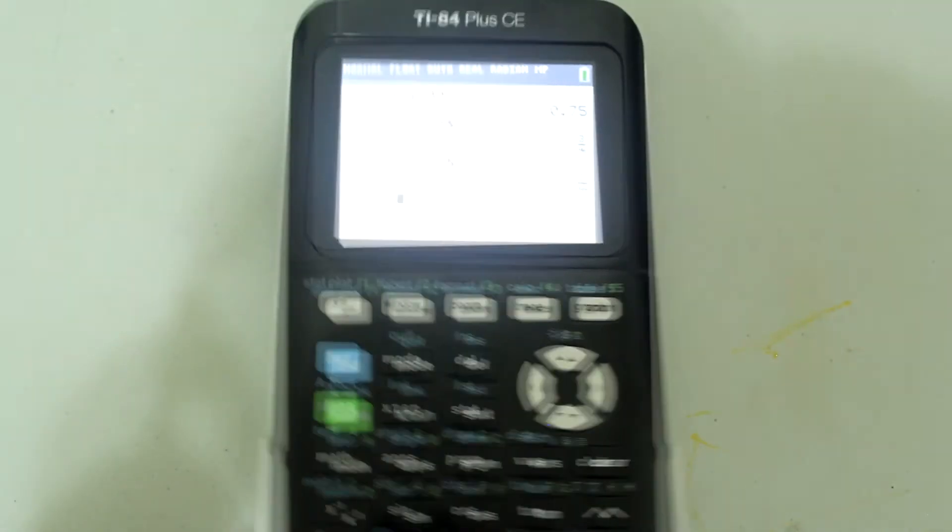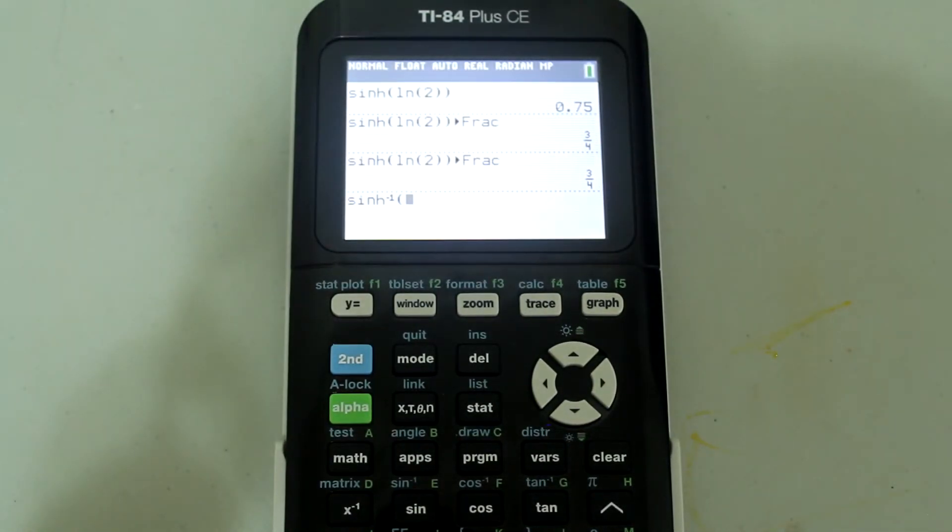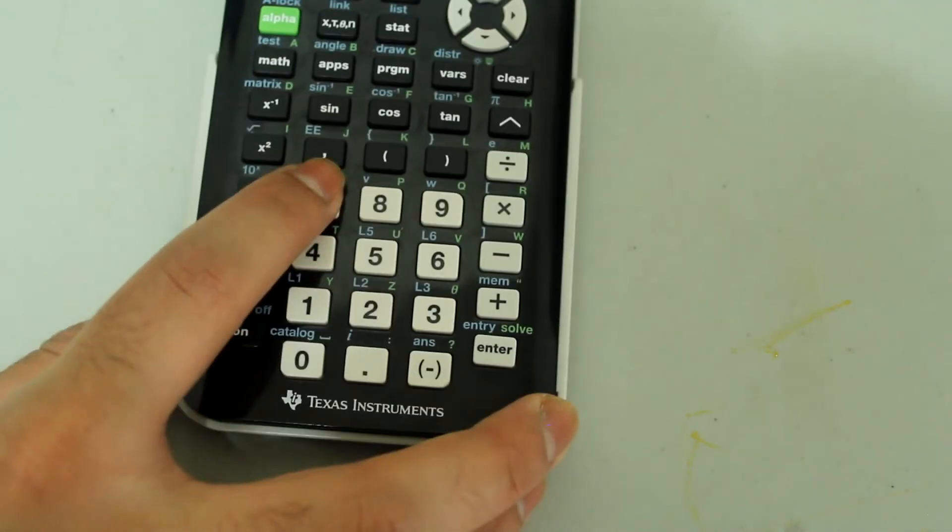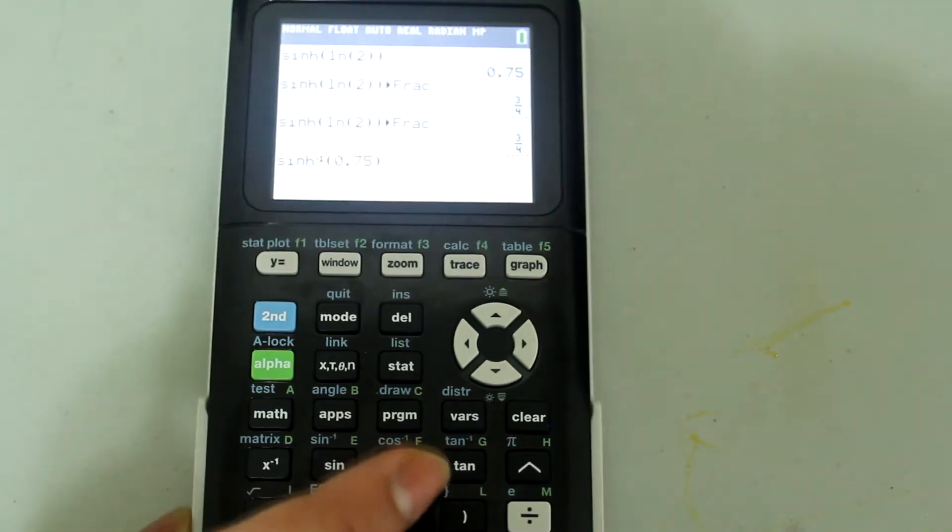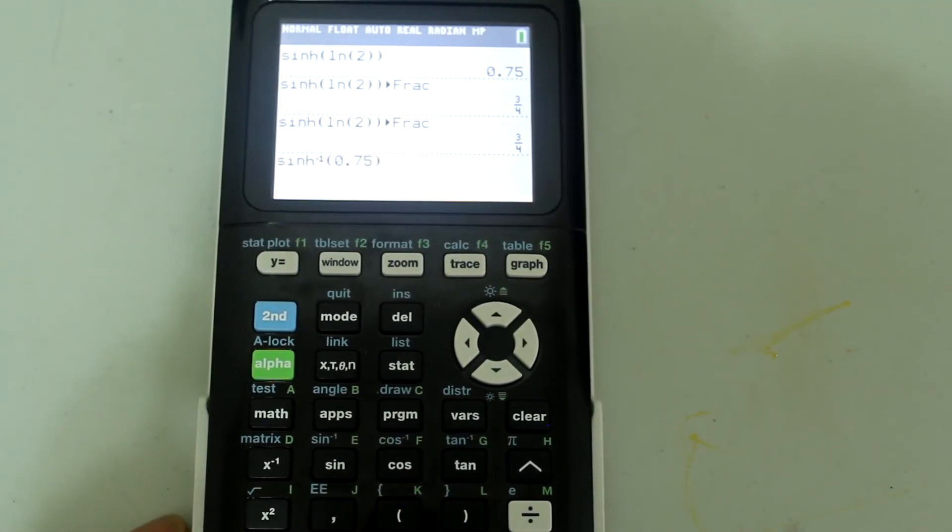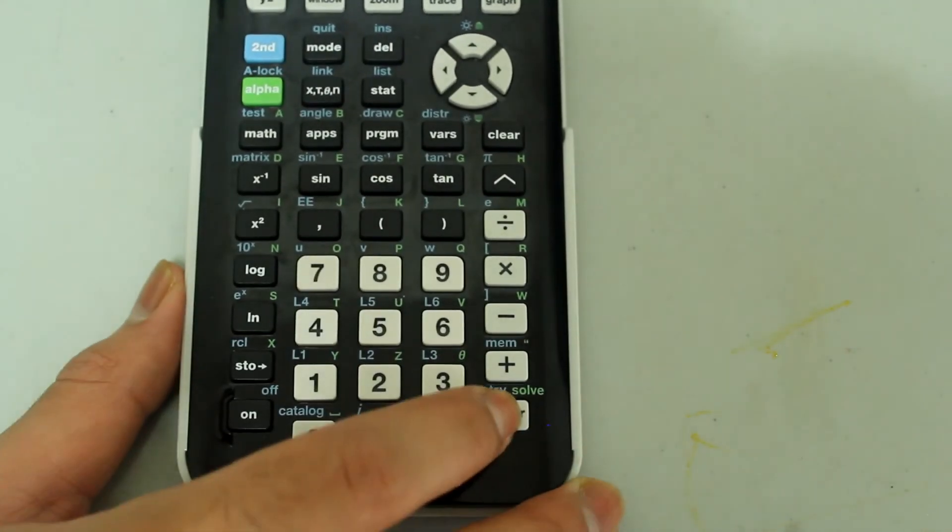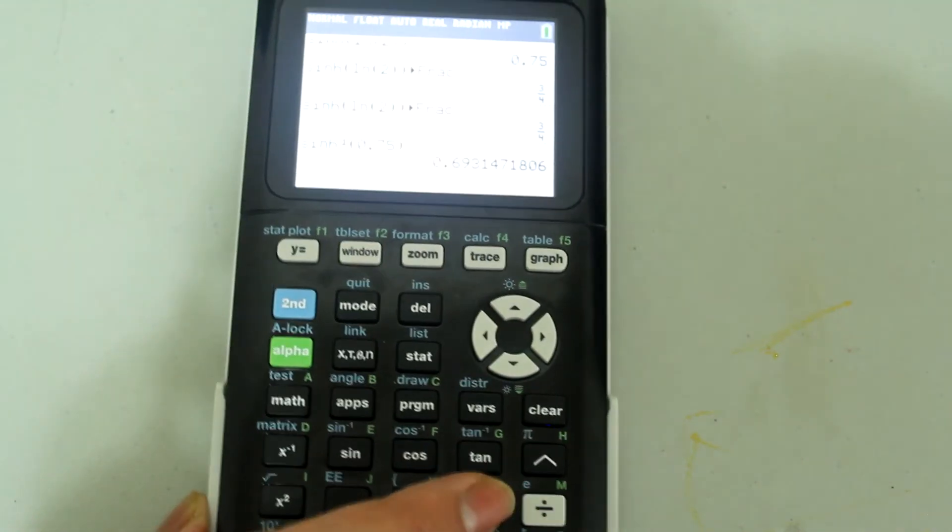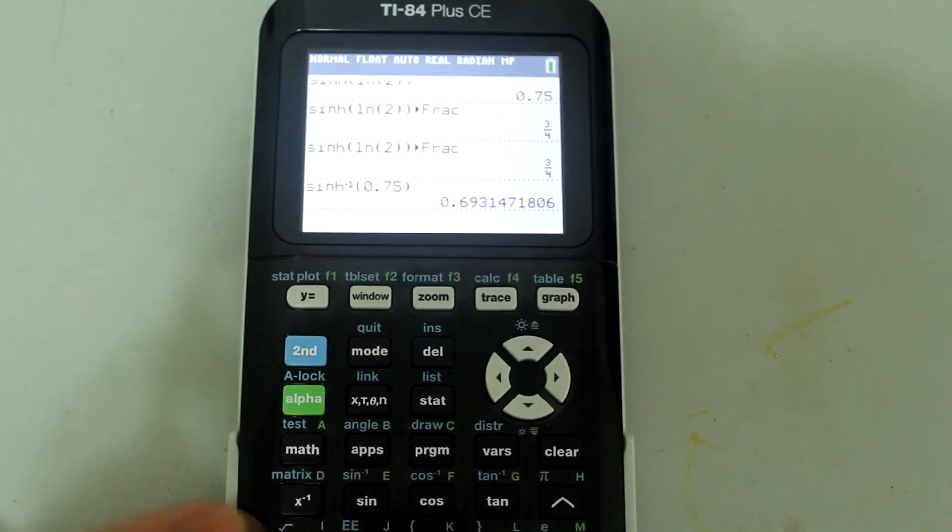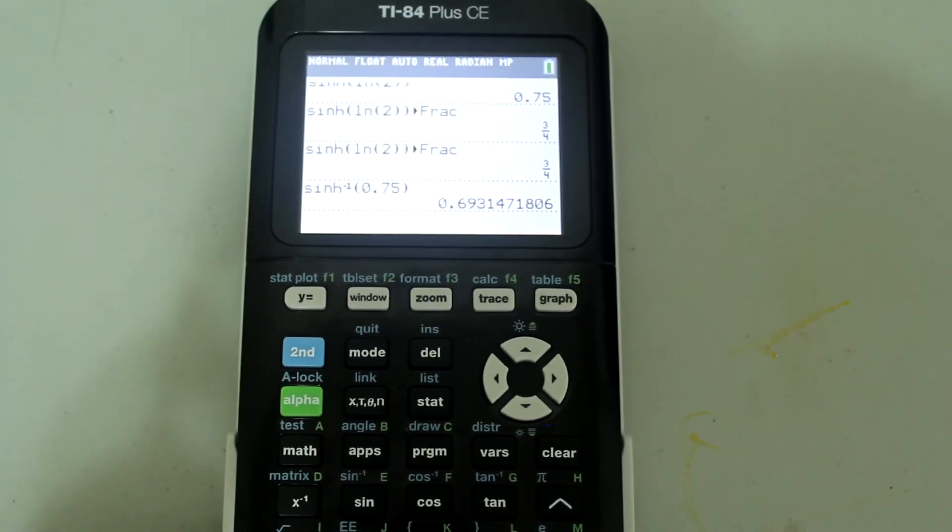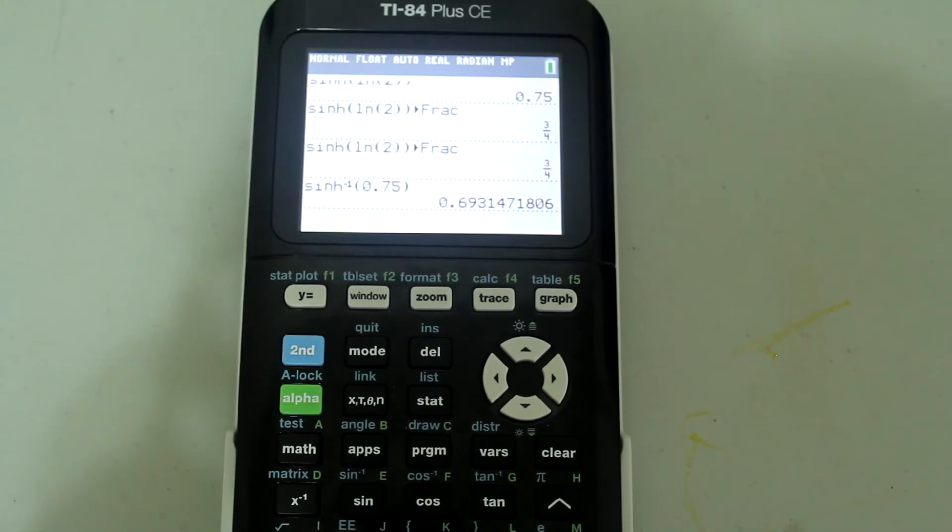Then I'm taken back to this screen. On the inside, I'm going to type in 0.75 and close the parentheses. The entry looks like this. Press Enter, and I get the answer as approximately 0.693, which is natural log of 2.